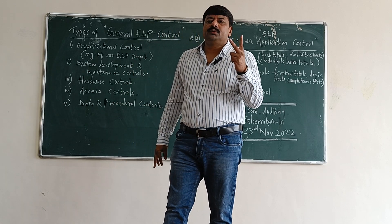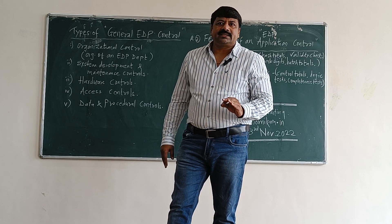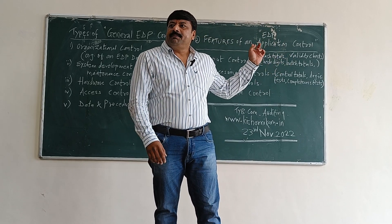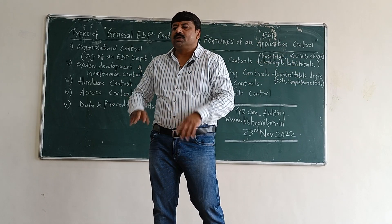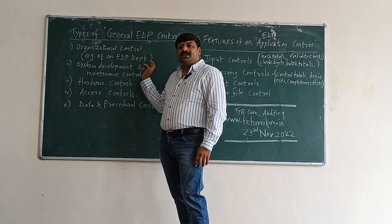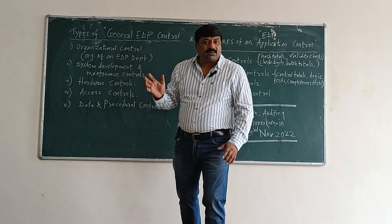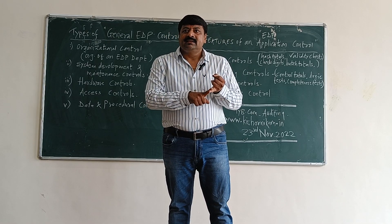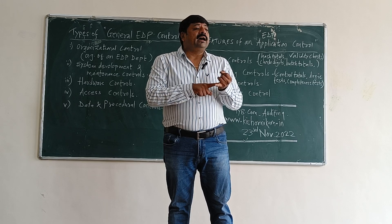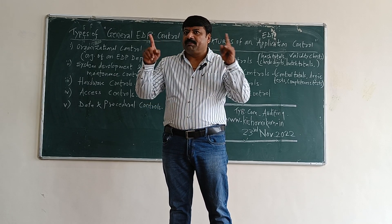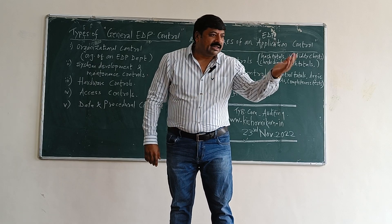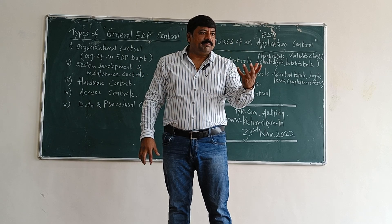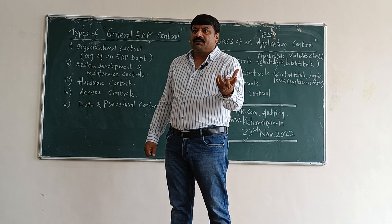Two types of controls we have to discuss in today's lecture. First is General ADP control. Second is ADP Application control. Under General ADP, number one is Organizational ADP — the organization of an electronic data processing department, the employees working on it, their training, the methodology used while entering and retrieving data, and security about the database maintained in that system or server.